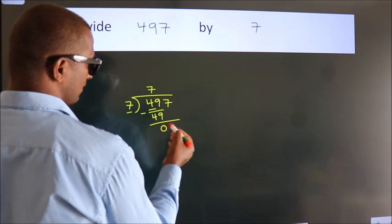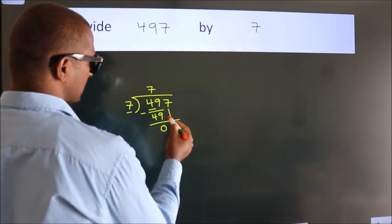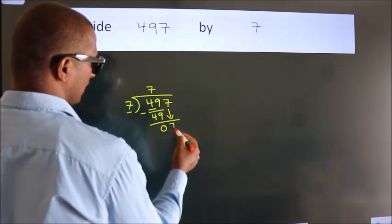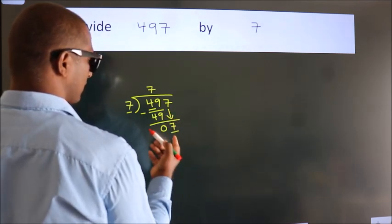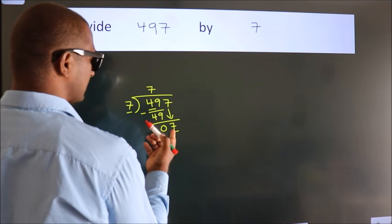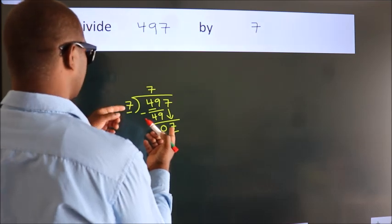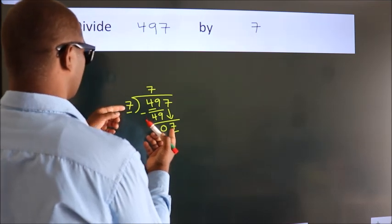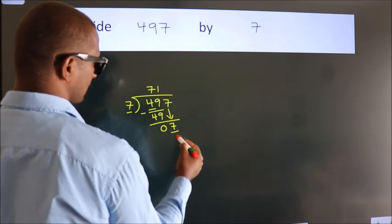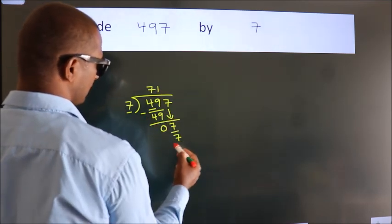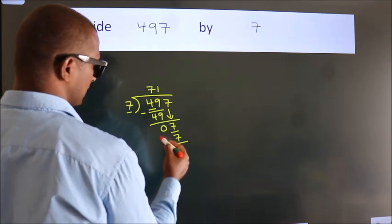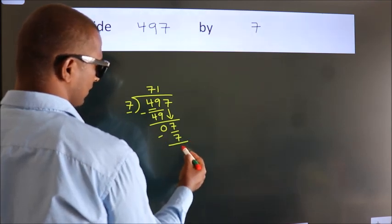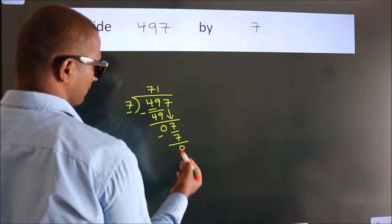After this, bring down the beside number — so 7 comes down, giving us 7. When do we get 7 in the 7 table? 7 ones are 7. Now we subtract — we get 0.